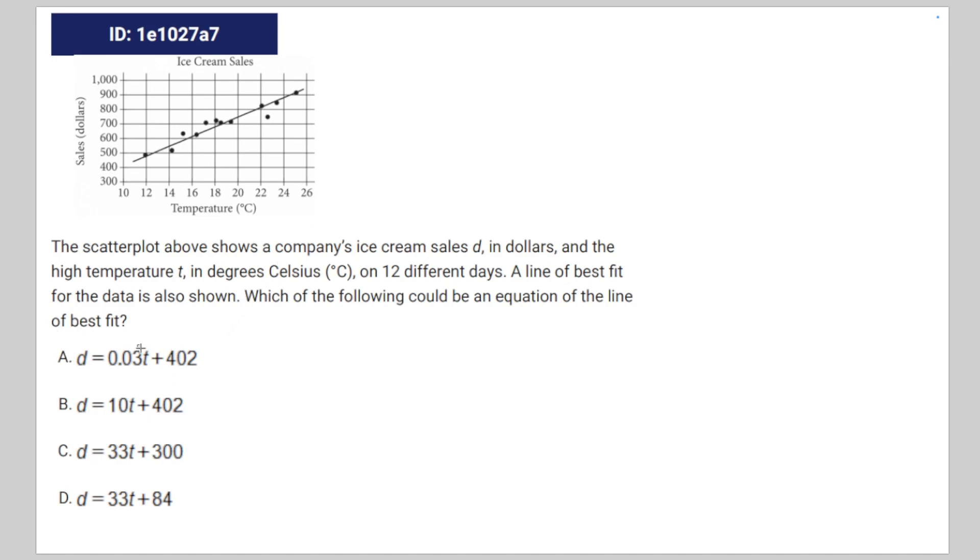You've got to realize that all these answer choices are in the form of slope-intercept, which is going to be y equals mx plus b, where m correlates to the slope and you can calculate it if you look at the graph.